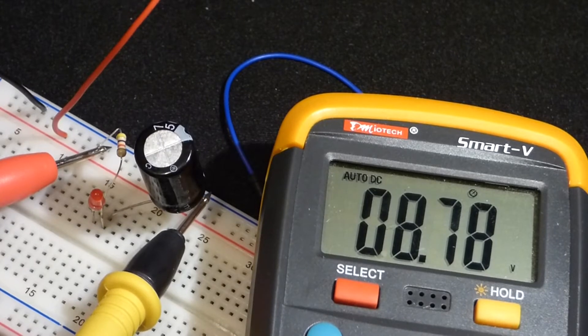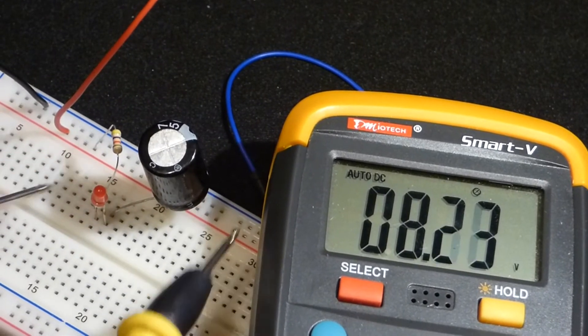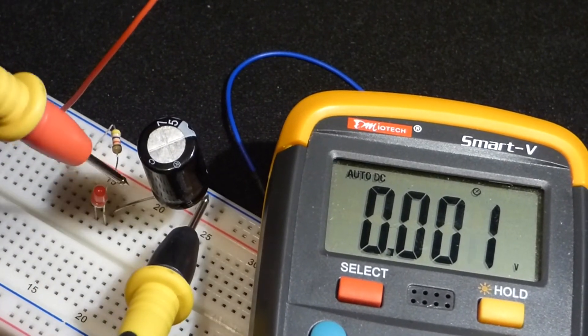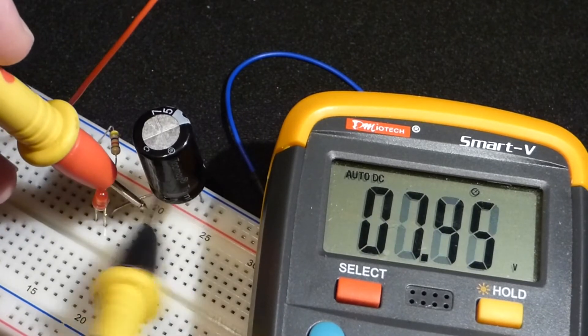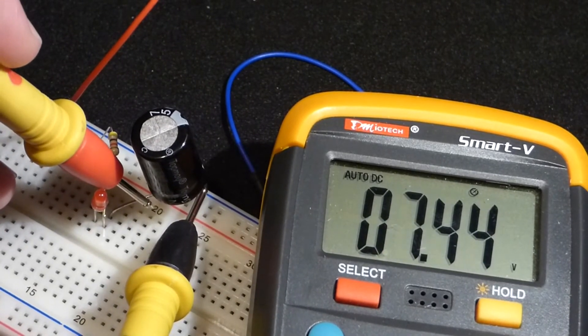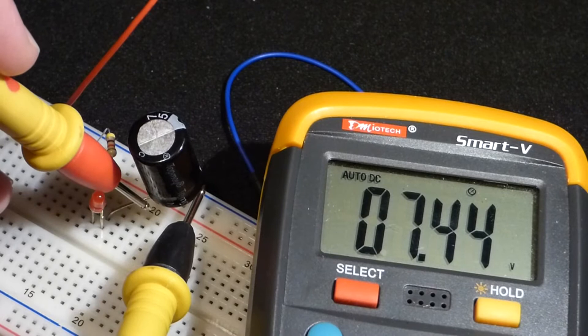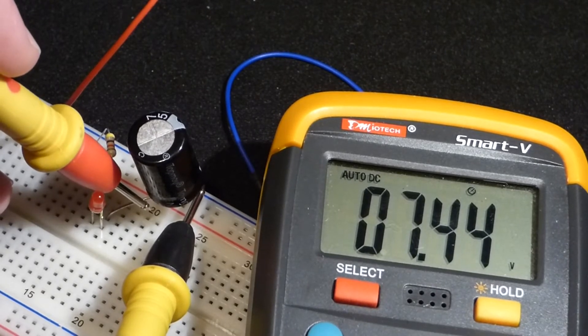Now let's measure the capacitor. We charge the capacitor while the LED was lit up, and here you can see the capacitor is about 7.4 volts. That's about a volt and a half less than the battery voltage.